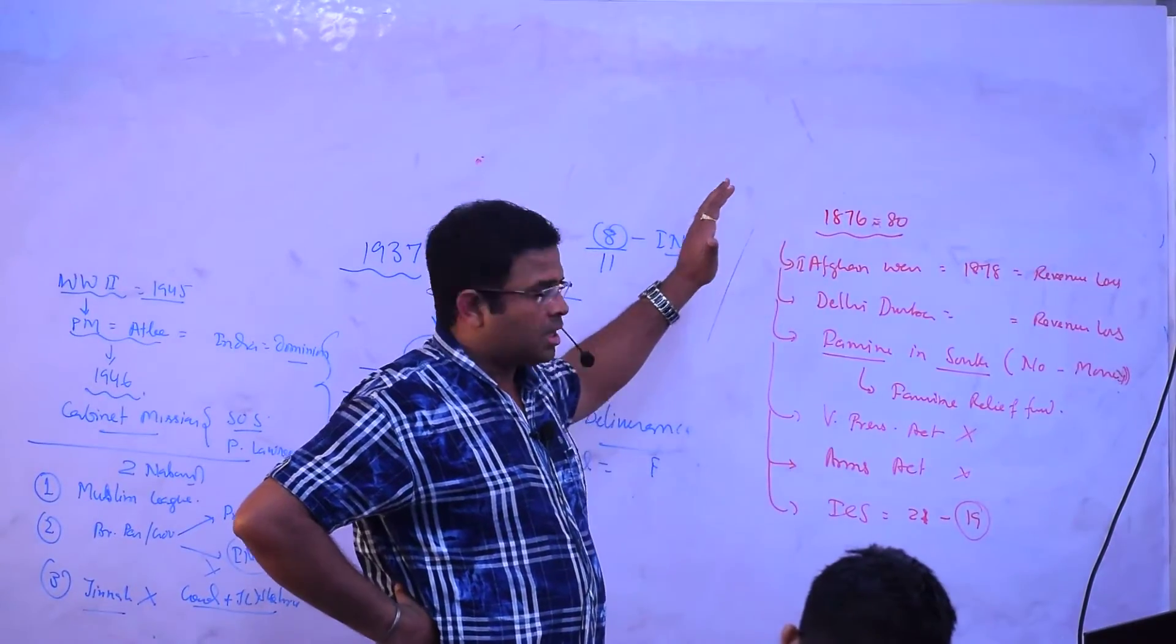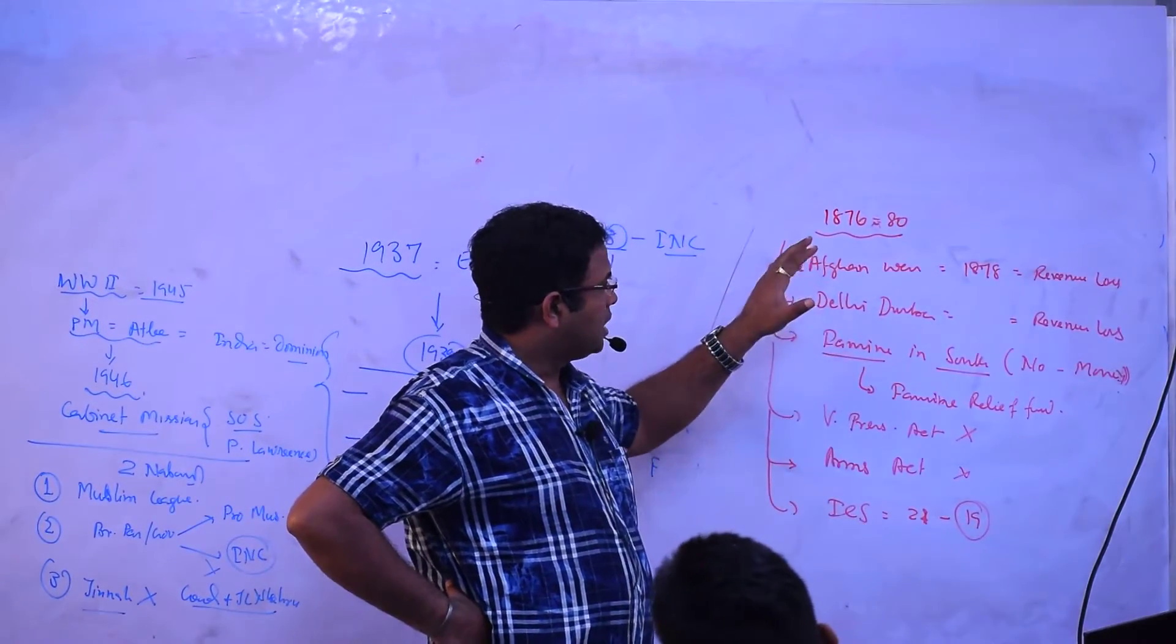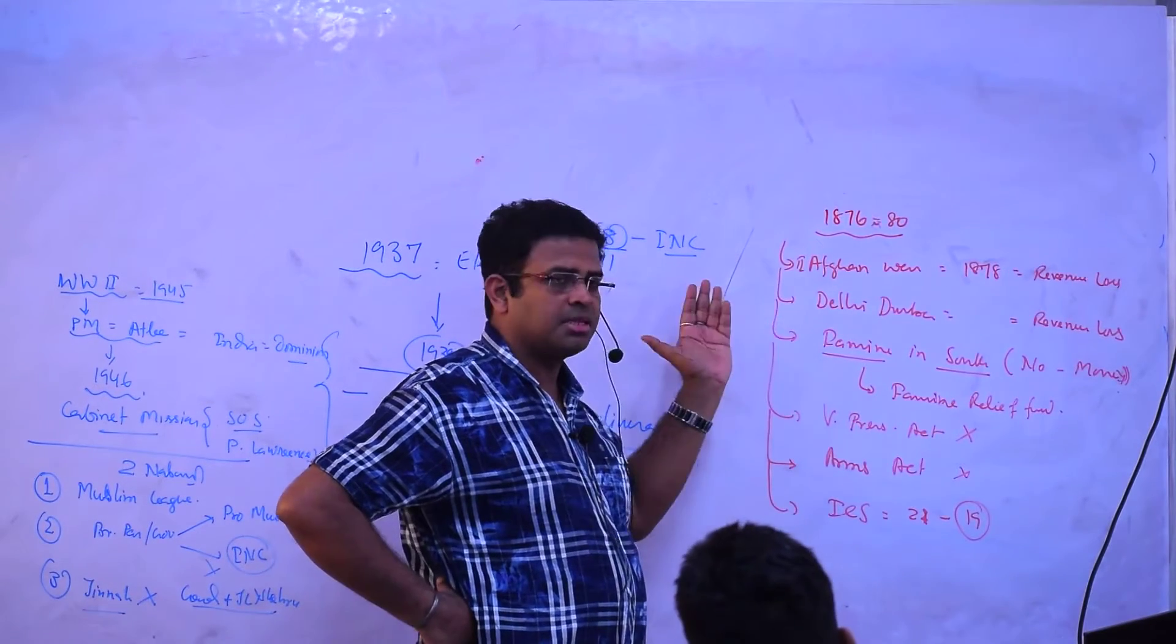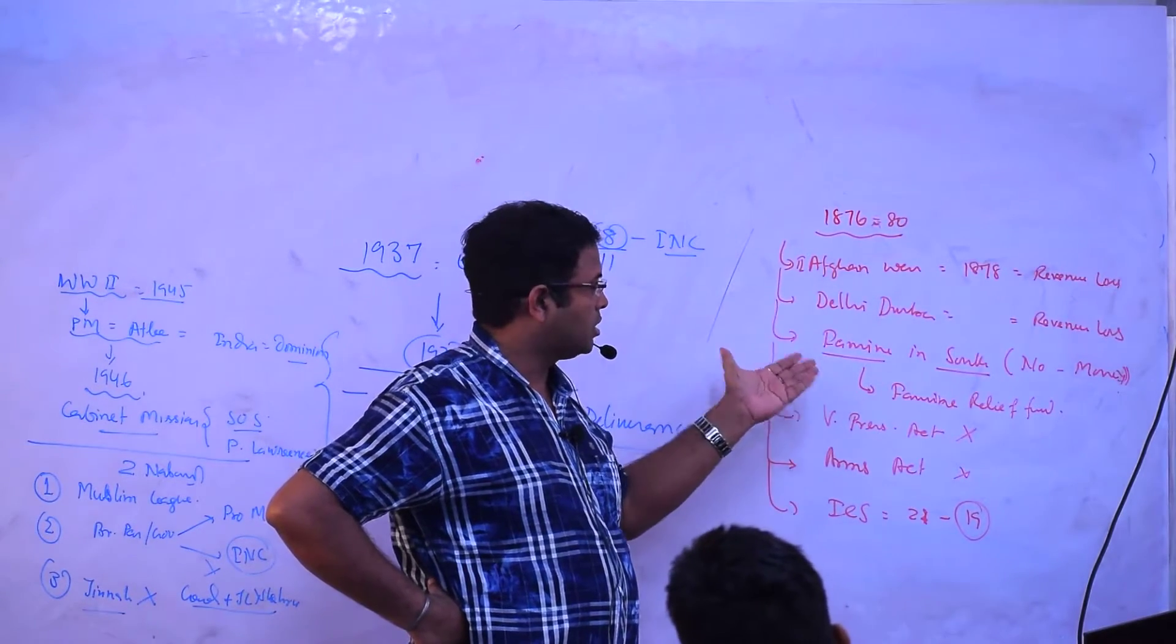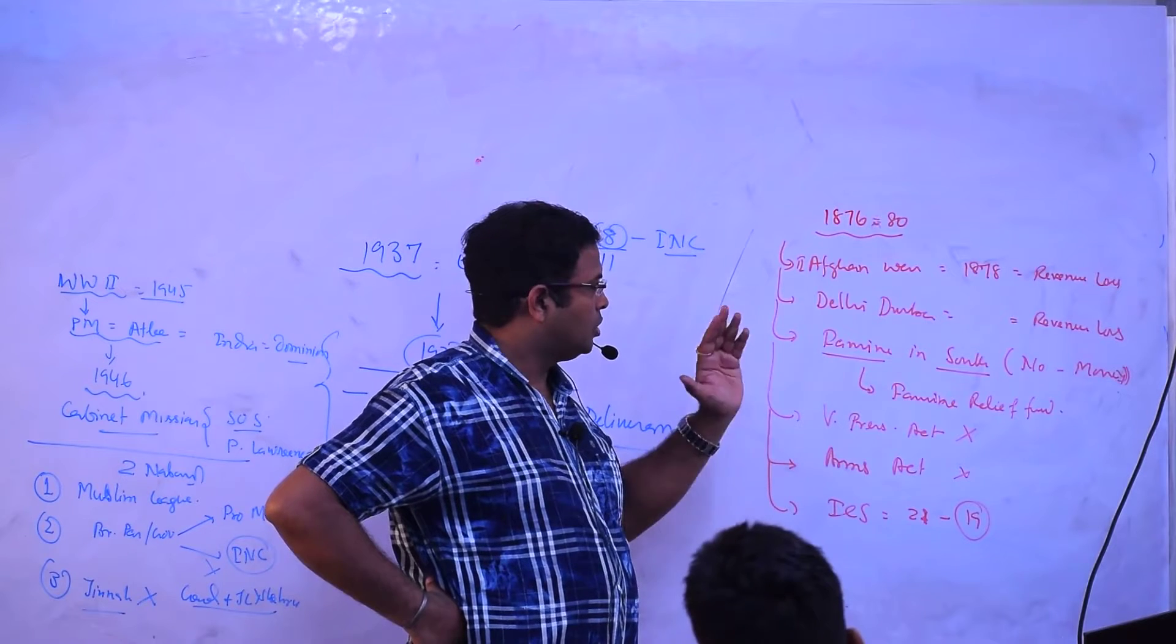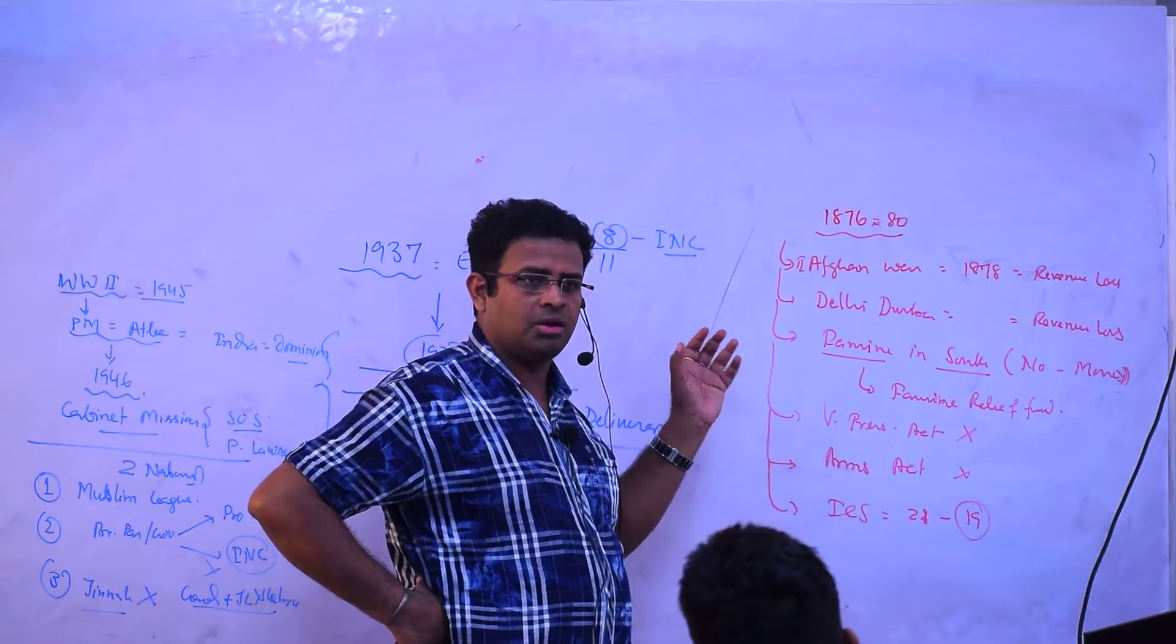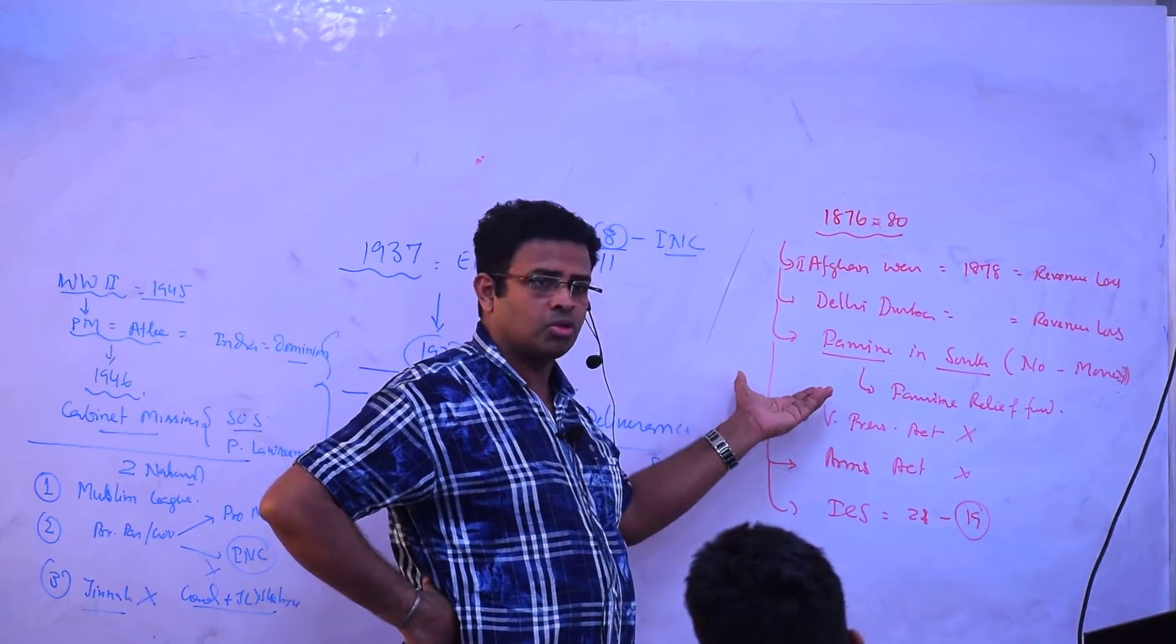Which are the things Lytton has done? I said that Afghan war and then revenue loss. Delhi Durbar he has made for himself, revenue loss, then famine in the south. No money was there, therefore the people are in a highly economic and social loss.